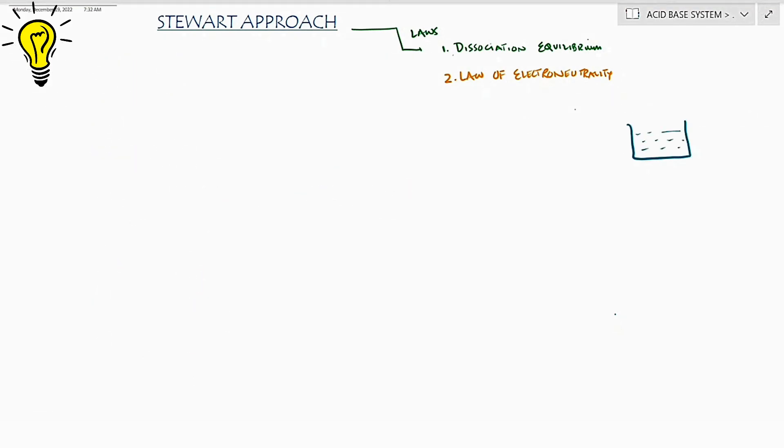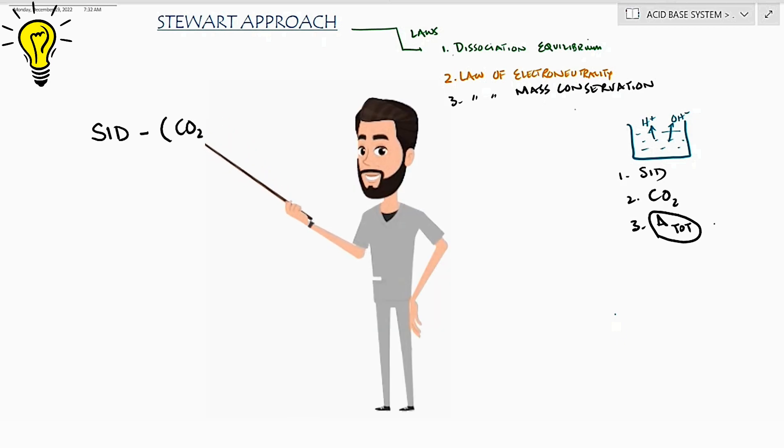The third is weak acids. So the weak acids, mainly the albumin and the phosphates remain constant under the law of mass conservation. So overall, where traditional approach revolved around the Henderson-Hasselbalch equation, the Stewart approach relies on this equation. So the strong ion difference minus the sum of carbon dioxide and total weak acids must be 0.